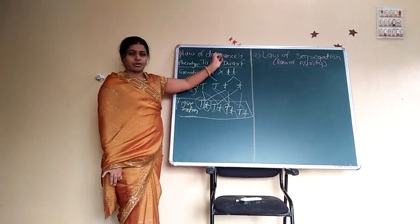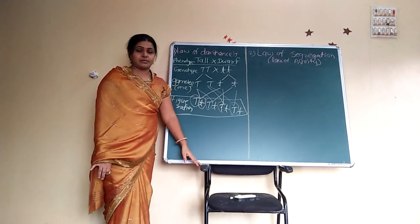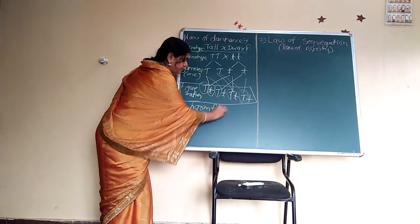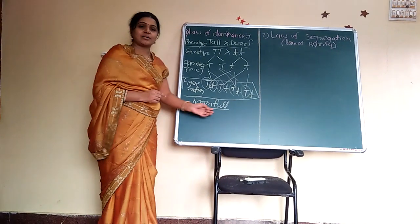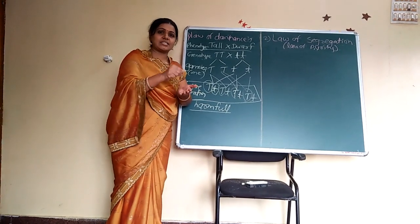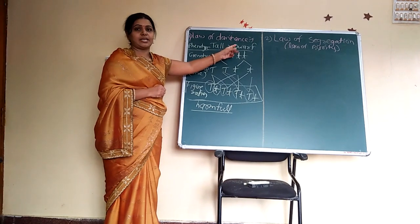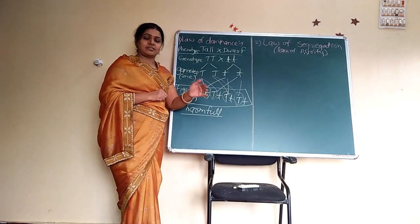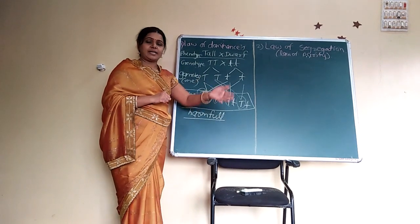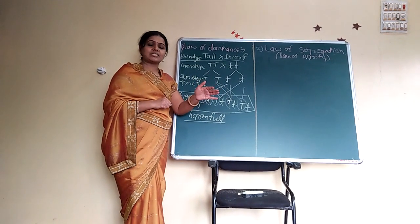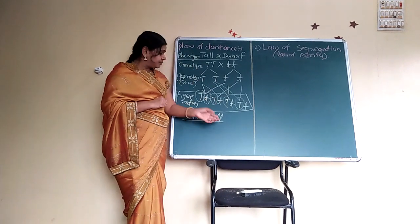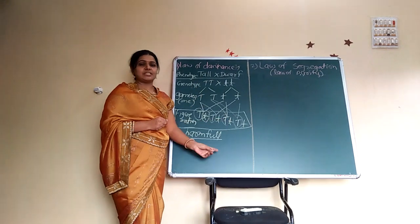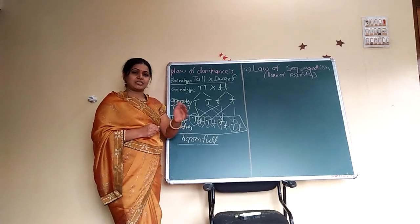The law of dominance is significant because the harmful recessive traits — the recessive alleles — are masked by the normal dominant allele. In human beings, harmful recessive traits such as diabetes are masked by the normal allele which suppresses or masks the harmful recessive trait. Mental retardation is also an example of a recessive trait which is always masked by the normal dominant trait.